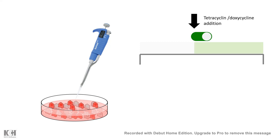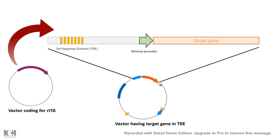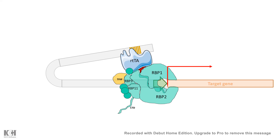By adding tetracycline or doxycycline in a Tet-On system, you can switch on gene expression — it is entirely in your control when you want the gene expressed. This is especially important for many genes involved in development: if you perturb those genes during development, the whole cell or organism might die. To study the role of a gene in a specific time frame, this system is really handy. Inside the transfected cell, the vector carrying rtTA expresses the rtTA protein, which interacts with RNA polymerase to drive transcription of the downstream target gene.